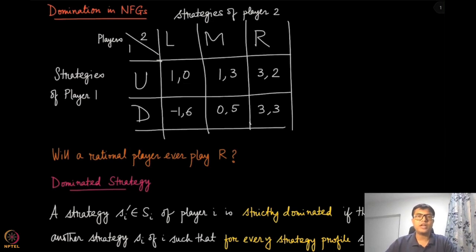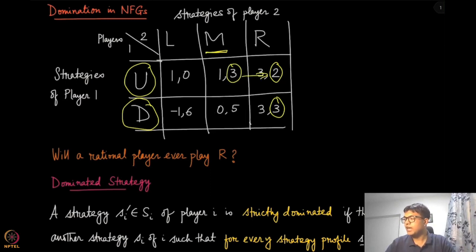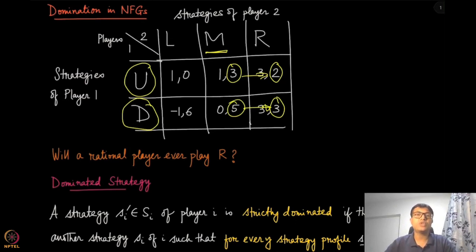I will argue you will never want to play R. The reason is that if you play R, in both cases — whether Player 1 chooses U or D — you get payoffs of 2 and 3 respectively. But at those same actions, if you choose strategy M instead, you get 3 which is larger than 2, and 5 which is larger than 3. So there is no perceivable situation where you played R that you cannot improve by playing M. Therefore, there is no reason why Player 2 will ever play R.